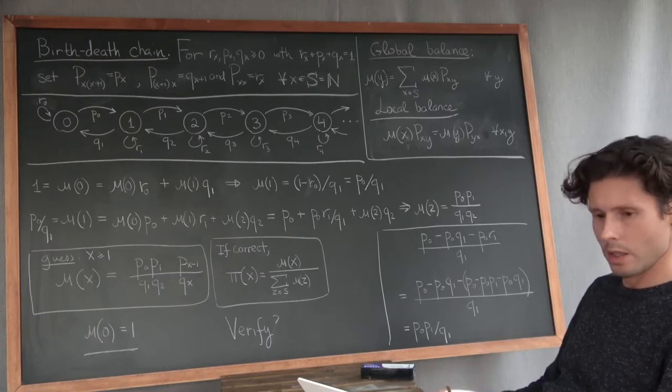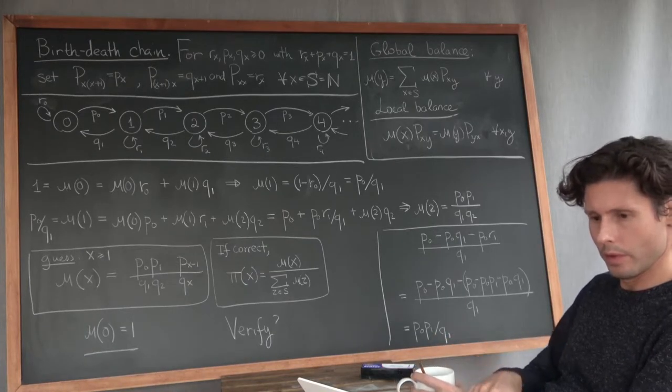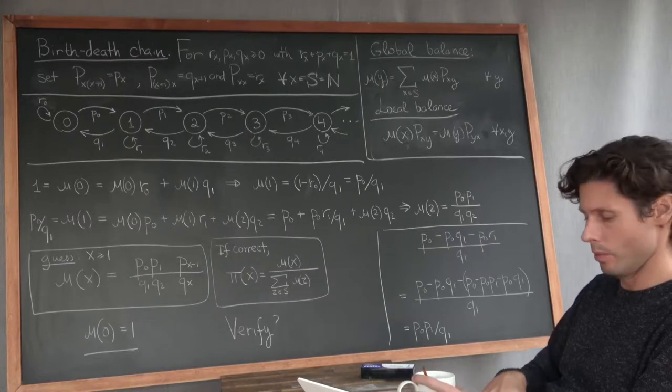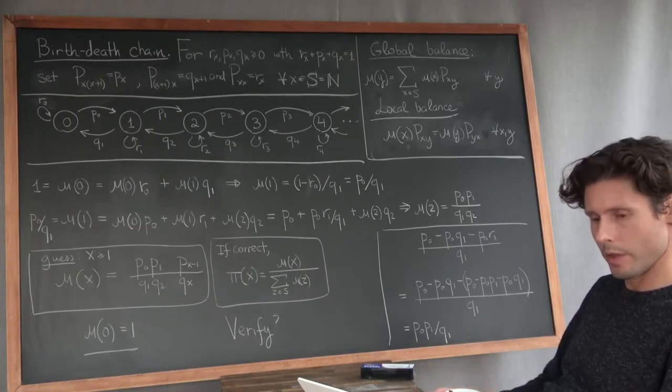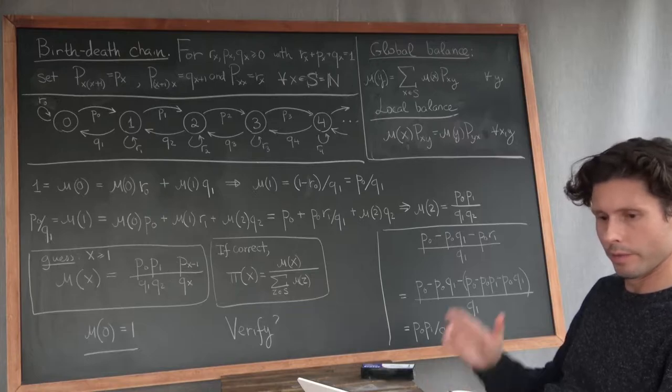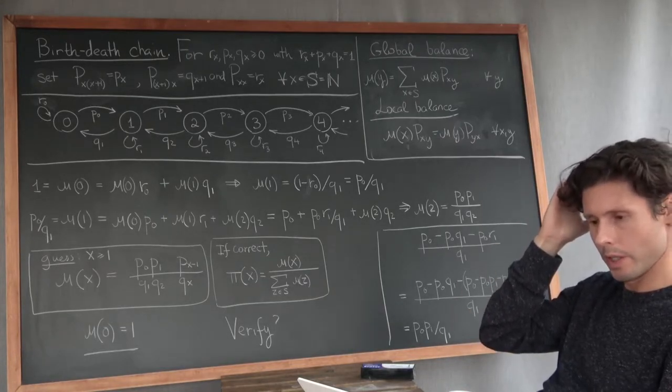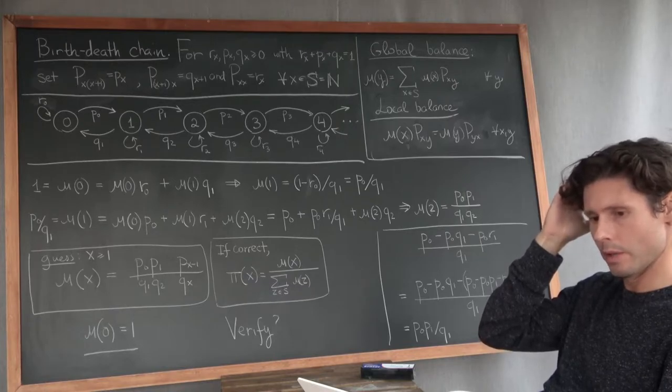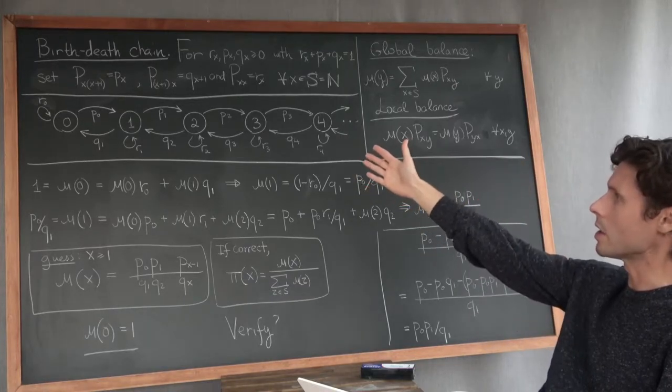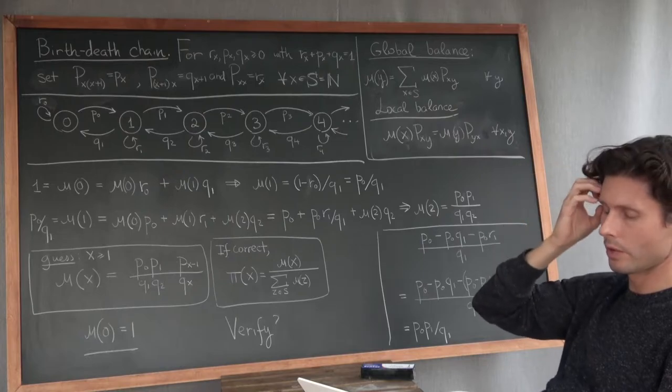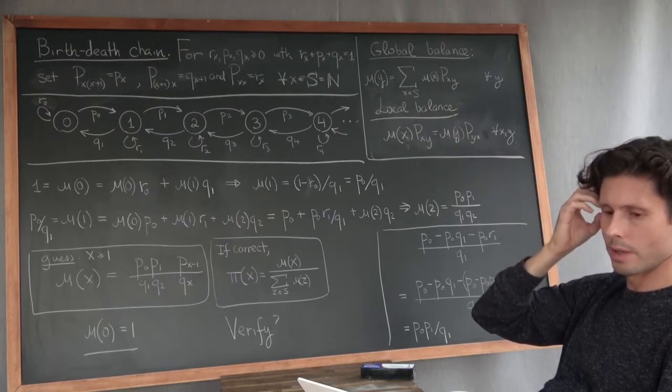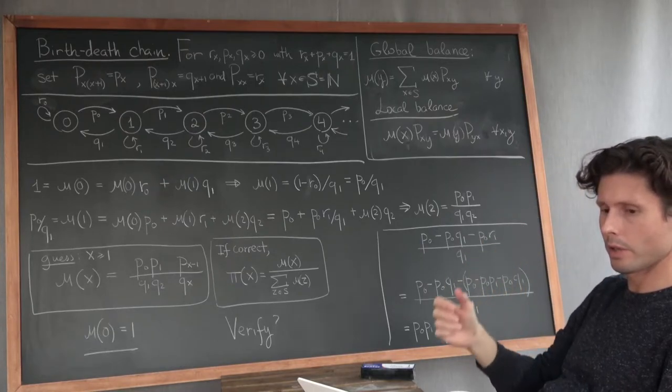Let's talk birth and death chains. These are some of the most well-studied Markov chains out there. They come out of biology, particularly the study of population sizes of species. The birth and death and the state of this chain, which lives on the natural numbers, represents the size of the population.